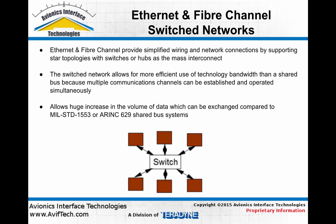Because network technologies such as ethernet and fiber channel are based on a switch at the core of the network, they provide simplified wiring and network connections within an aircraft system. End nodes are simply wired to the switch and can then communicate with any other node on the network. Switch networks also allow for more efficient bandwidth use compared to a shared bus like 1553, where only one node can communicate at any given time. With a switch network, individual data paths can be established through the switch between end nodes, so multiple pairs of end nodes can communicate simultaneously and take full advantage of the bandwidth on each link.